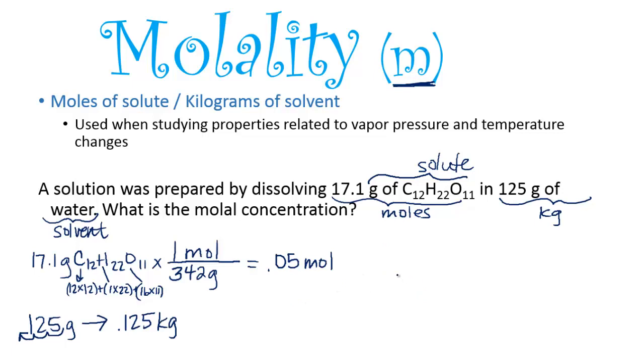Now, just have to put them over each other. So 0.05 moles divided by 0.125 kilograms equals 0.4 molal. So this is where you'll have to keep track of really writing a capital M compared to a small m so I know which one you are talking about.